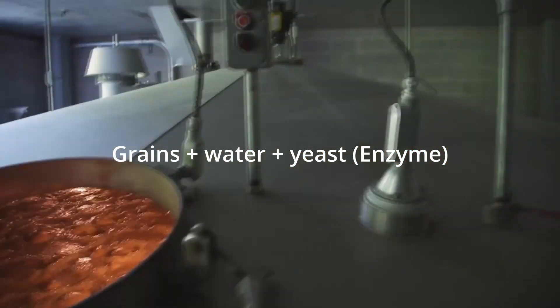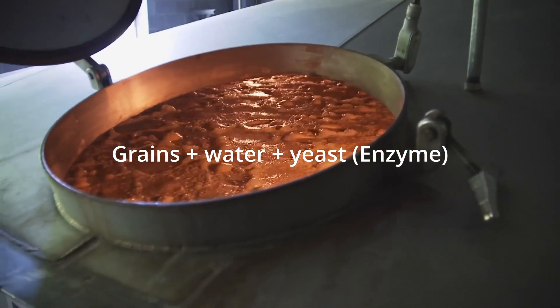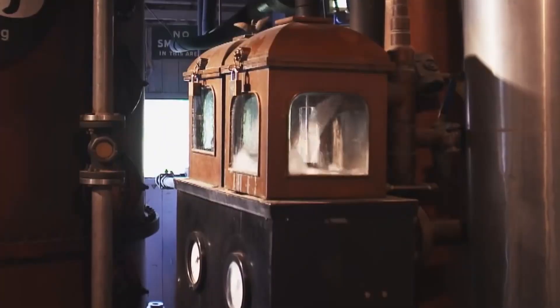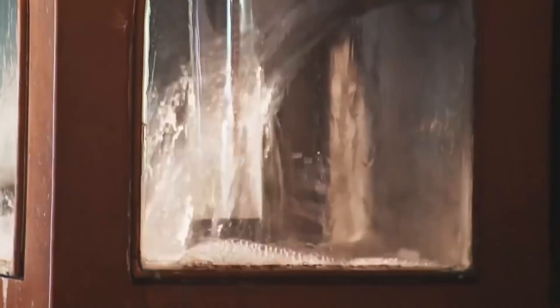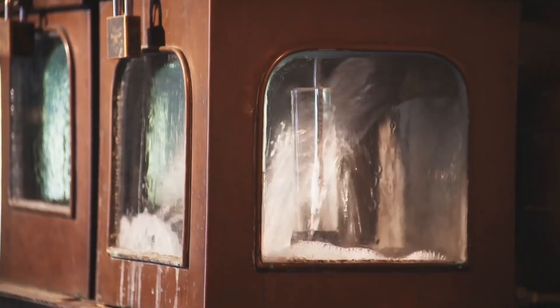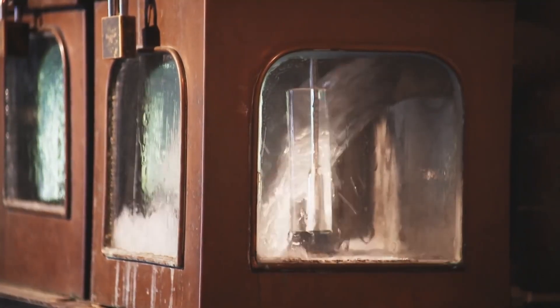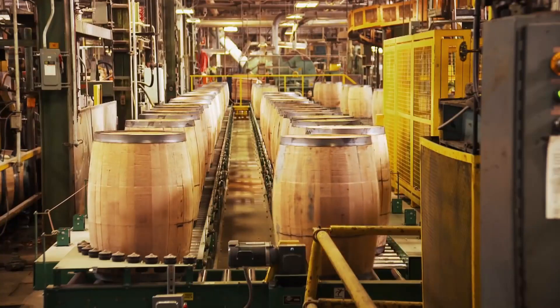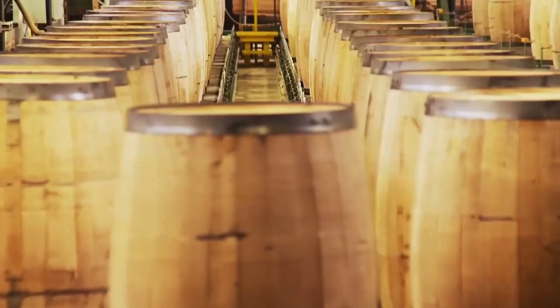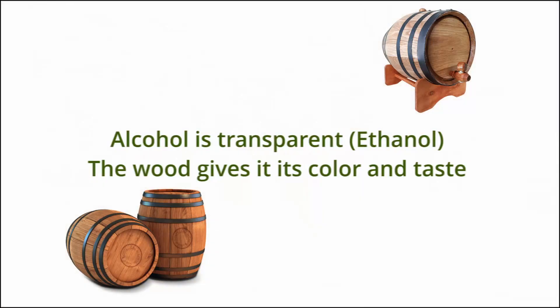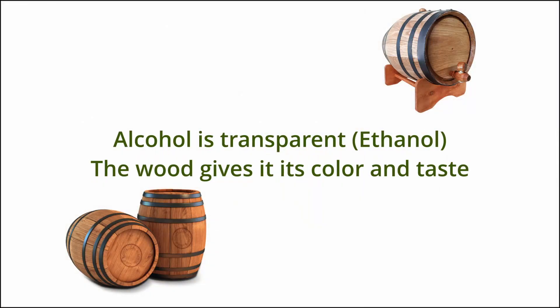At this stage, the alcohol content is similar to a beer or wine. The water is separated from the alcohol and the alcohol is put into barrels for aging. What comes out of the barrels into the bottle is whiskey. The wood gives the whiskey its color and some flavor — the alcohol content itself is transparent, like with vodka.